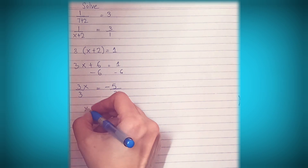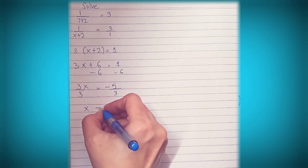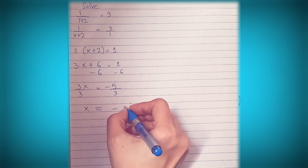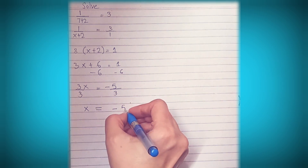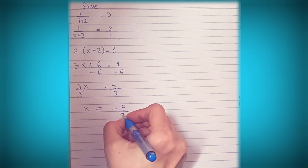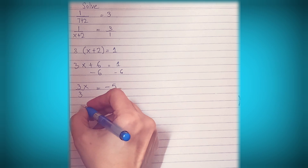So we divide both sides by 3. Now we have x is equal to negative 5 thirds.